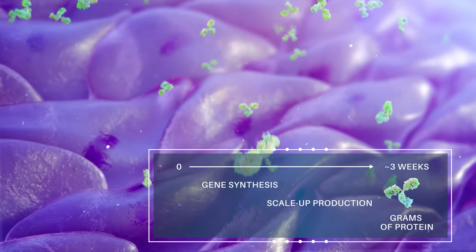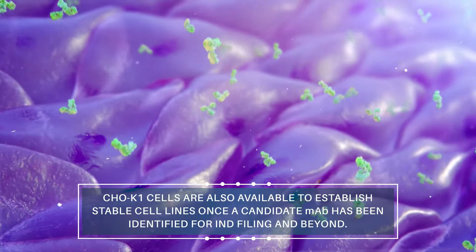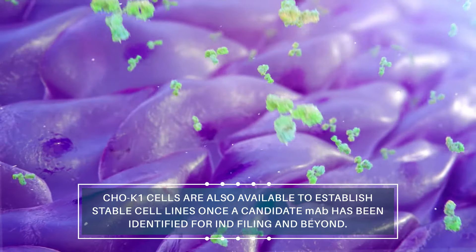The same CHO-K1 cells are also available to establish stable cell lines once a candidate MAB has been identified for IND filing and beyond.